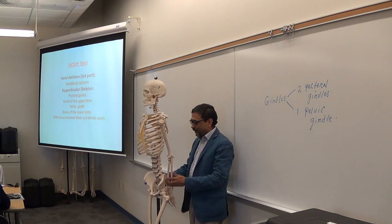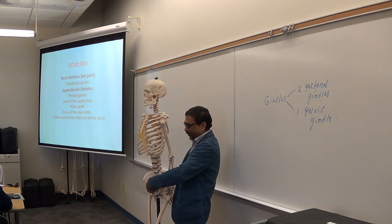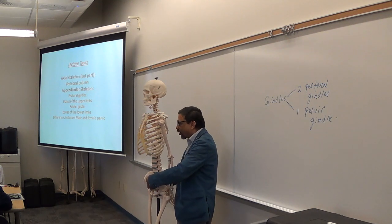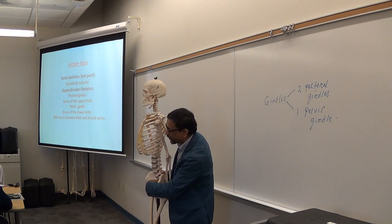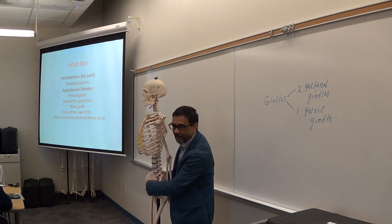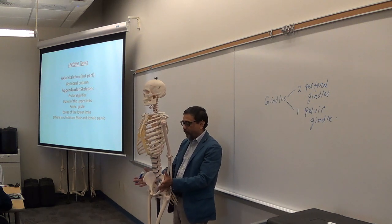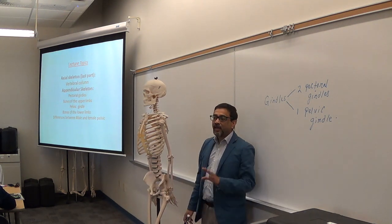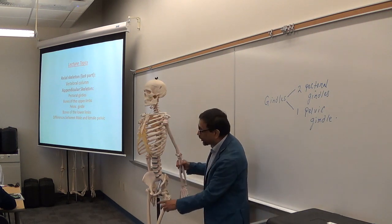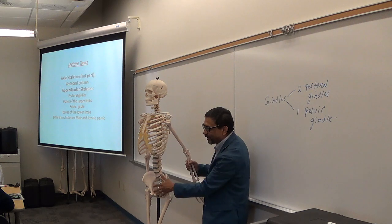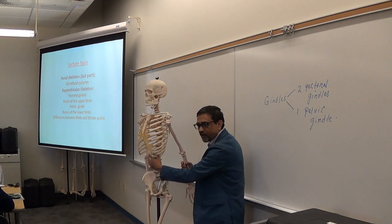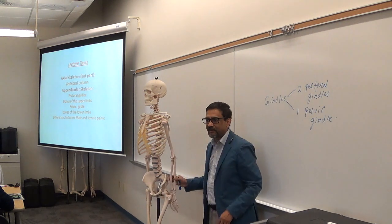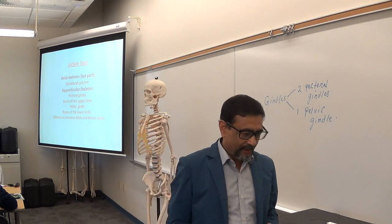Number three is protecting the pelvic organs. This is the pelvic cavity — you have the thoracic cavity, abdominal cavity, and pelvic cavity. Pelvic organs like the uterus, when the fetus or embryo is inside, are very important and must be protected. So those organs are protected by the pelvic girdle. To summarize: the pelvic girdle attaches the lower limb bones to the axial skeleton, transmits body weight to the legs, and protects the pelvic organs.